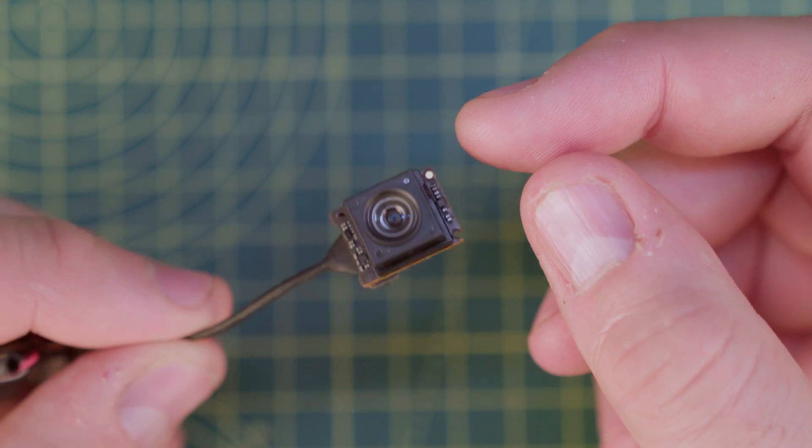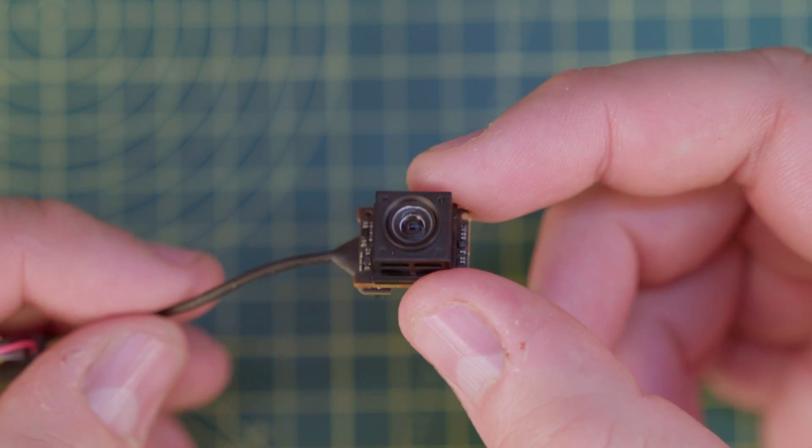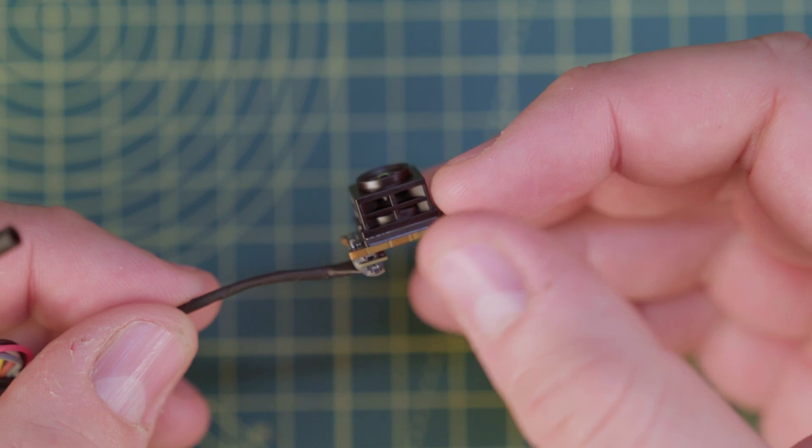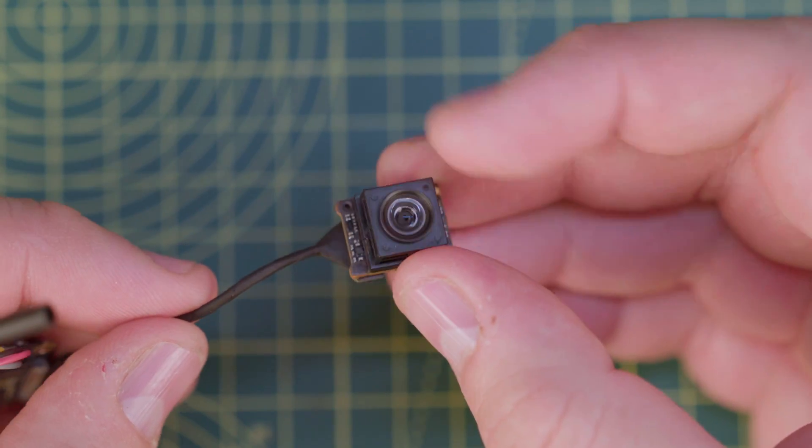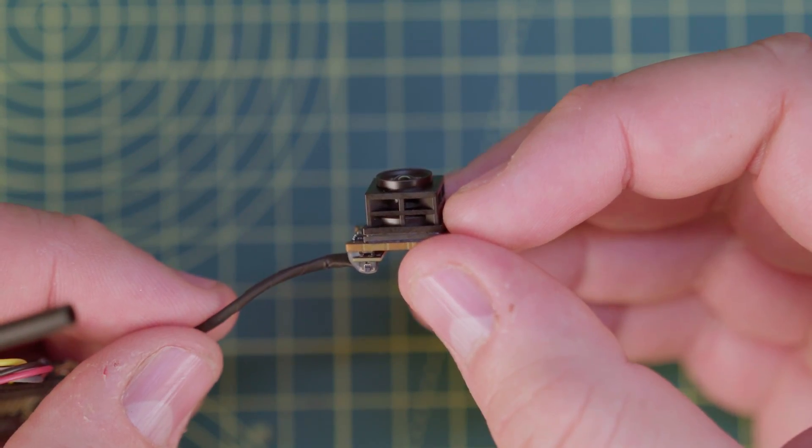So I'm not going to lie. Given what we're going to be doing to this original lens, your warranty technically is out the window. However, if you were to glue back the original lens with a bit of super glue before sending it back to DJI for repairs, I'm not going to tell on you.